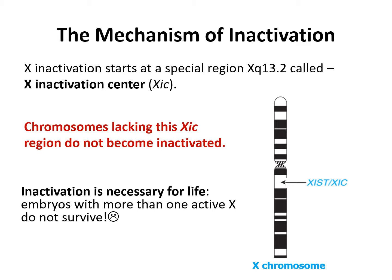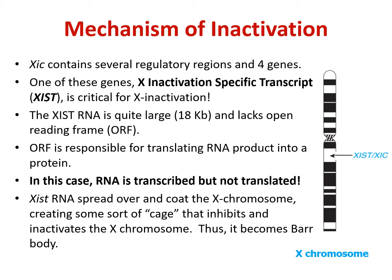Now let's discuss the mechanism of X inactivation. X inactivation starts at a specific region on the long arm of X chromosome at Xq13.2. This region is called the X inactivation center. Chromosomes lacking this X inactivation region do not become inactivated. X inactivation center contains several regulatory regions and four genes. One of these genes, called the X inactivation-specific transcript or XIST, is critical for X inactivation.